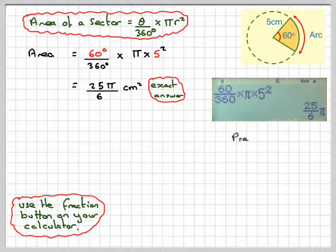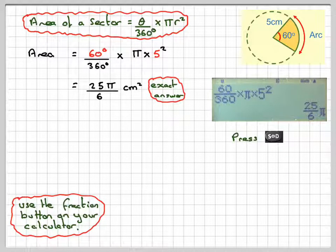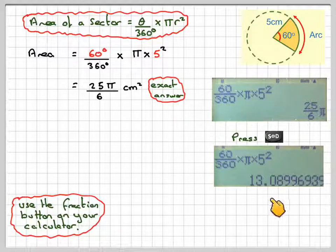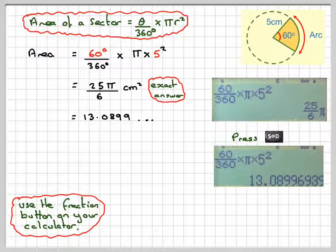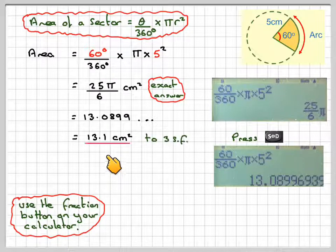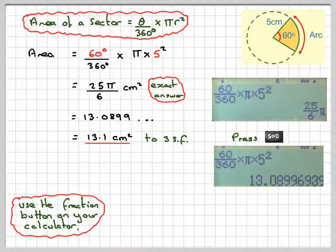And then the decimal equivalent you get by pressing S to D, which is 13.089. And then that 8 will make that 0 a 1. So the final answer will be 13.1 centimeters squared to 3 significant figures.